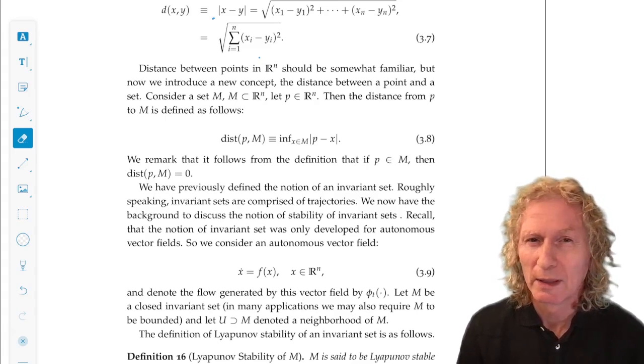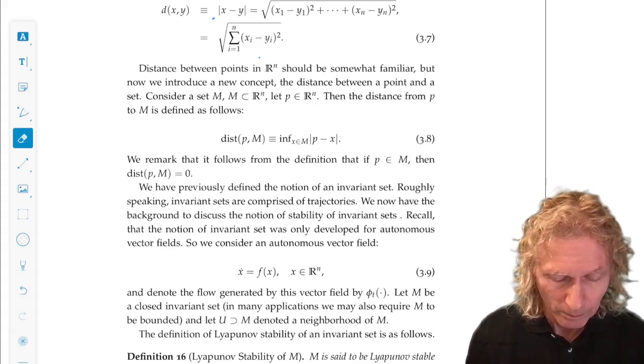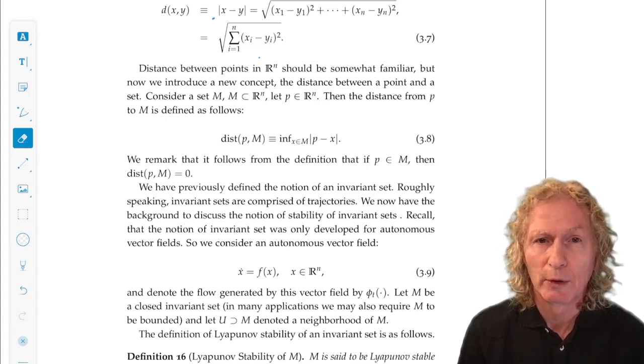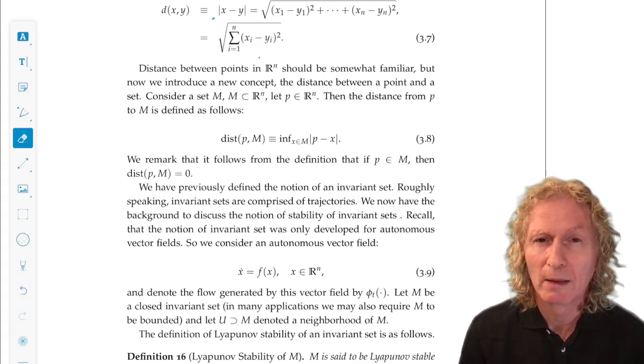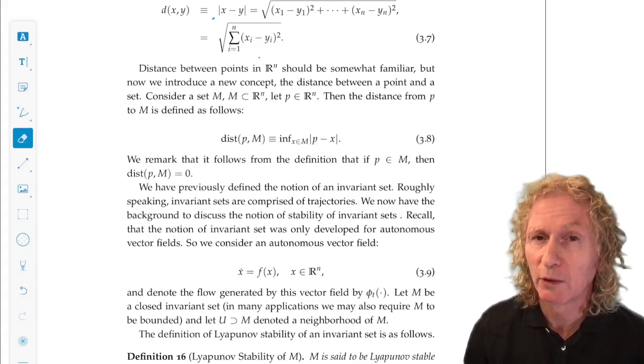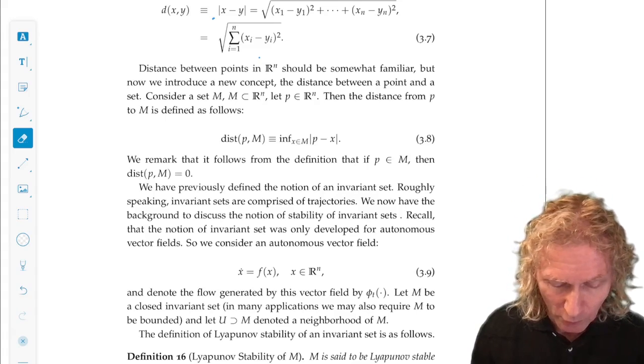And what we want to do is define a distance between the point P and the invariant set. You can kind of guess what that's going to be. We measure the usual distance between P and all possible points in M, and we take the smallest such distance. That's what this formula says.